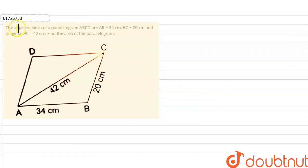Hello friends, what will we tell you about this question? The adjacent sides of a parallelogram ABCD: AB is 34 cm, BC is 20, and diagonal AC is 42. Find the area of the parallelogram.